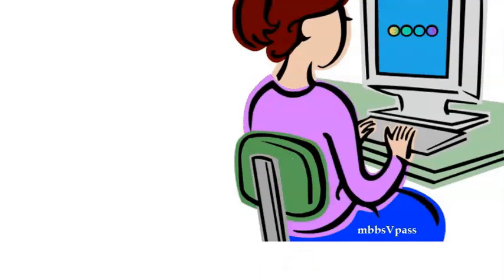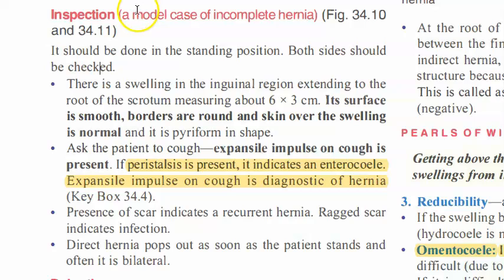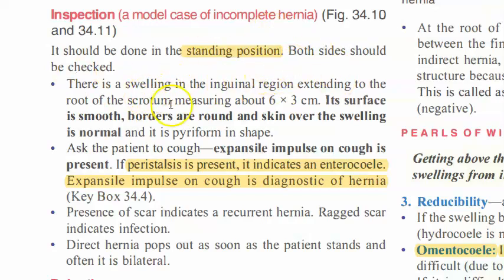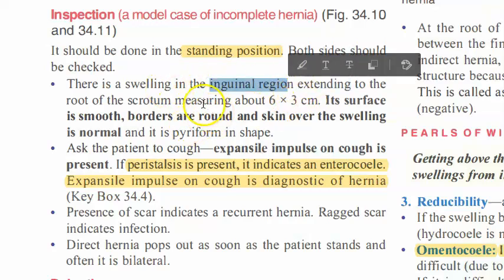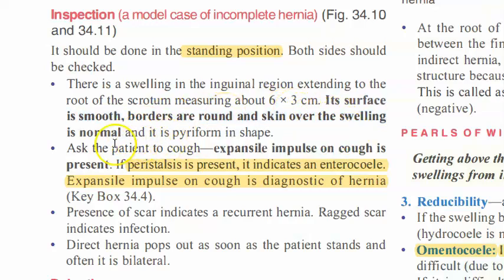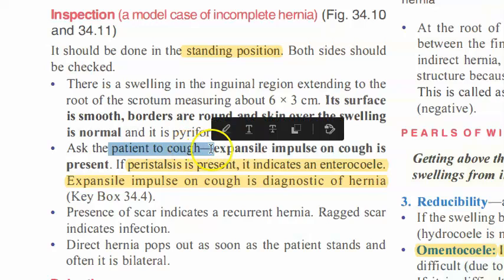Now let us go to inspection. After taking history, you will make the person stand and check for the swelling. Here we are talking about swelling in the inguinal region. You will check the size, borders, surface, and the skin over the swelling. Then you will ask the patient to cough.